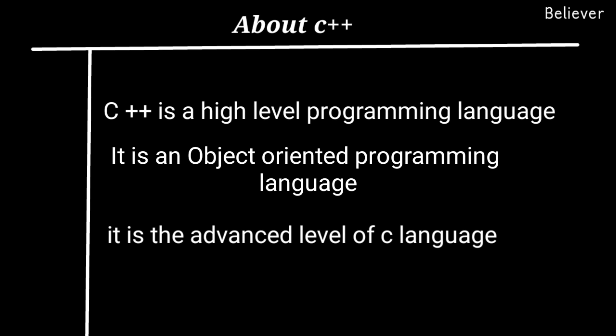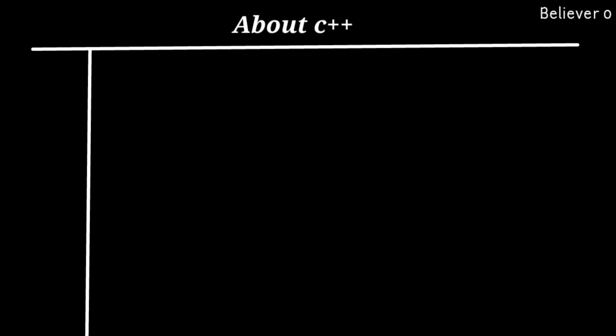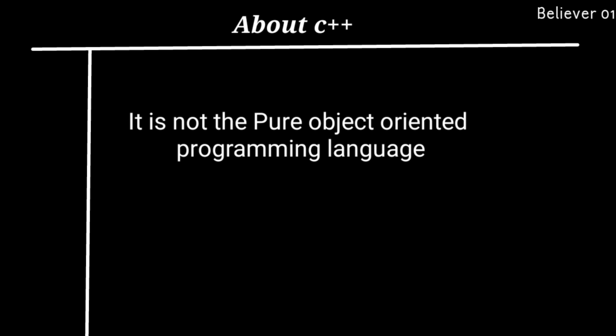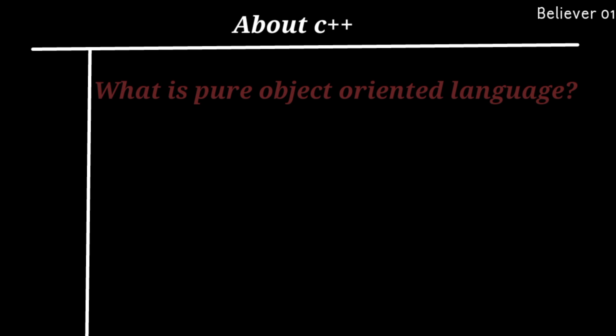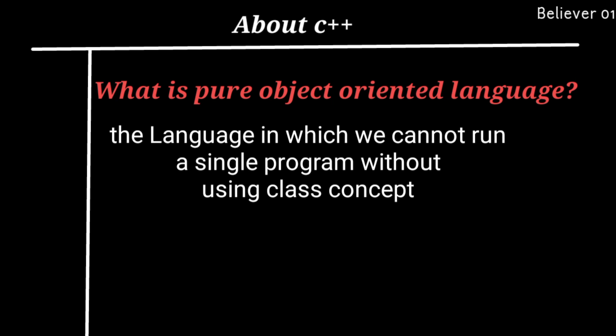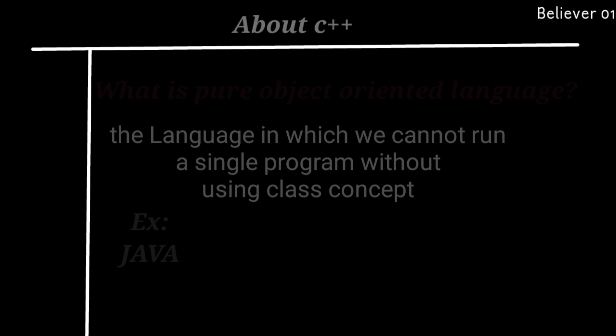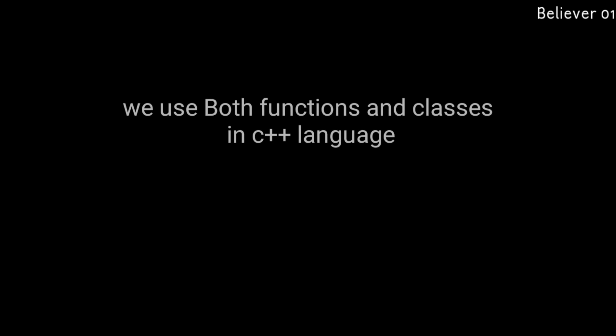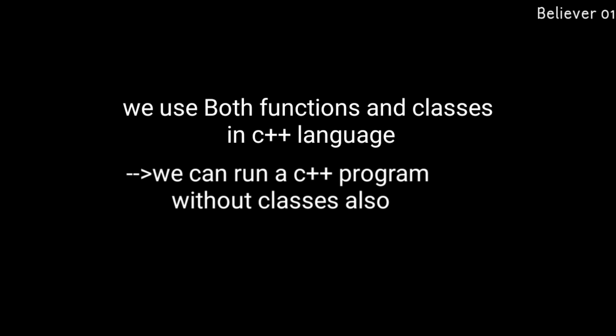Now let me introduce what exactly C++ language is. C++ is a high-level programming language. Most importantly, it is an object-oriented programming language — it is the extension or advanced level of C language. C++ is not the purest object-oriented programming language. A pure object-oriented language is one in which we cannot run a single program without using the class concept — example: Java. But in C++ we can run a program without using class concept, by using functions.